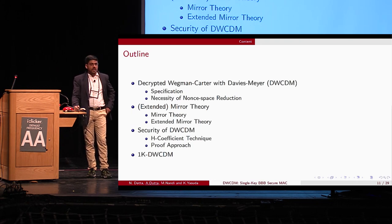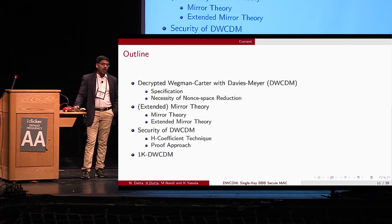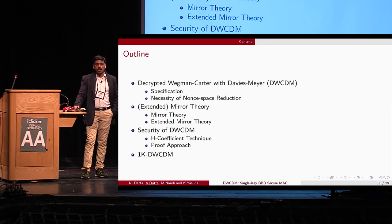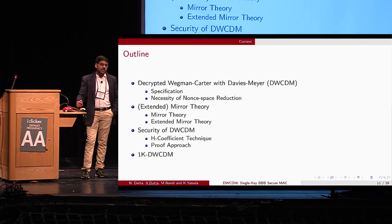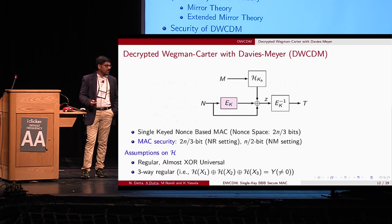The rest of the talk is organized as follows: first, the specification of our construction, followed by the necessity of our nonce-space reduction. Then we discuss mirror theory and extended mirror theory as tools to prove security, followed by an overview of the security proof, and finally a glimpse of the pure single-key variant 1K-DWCDM.